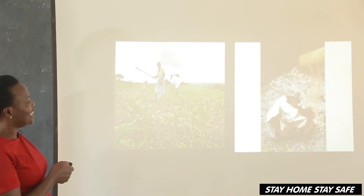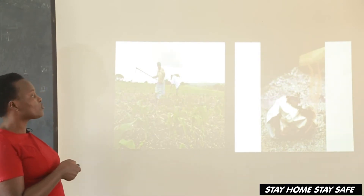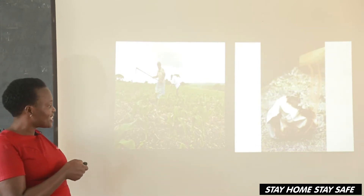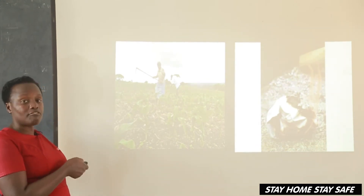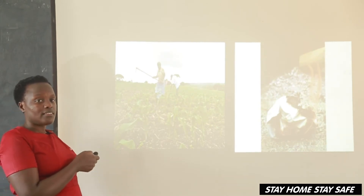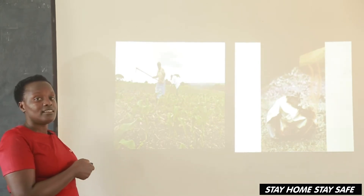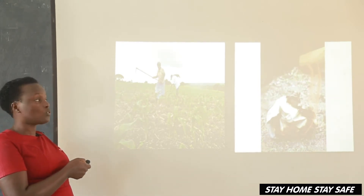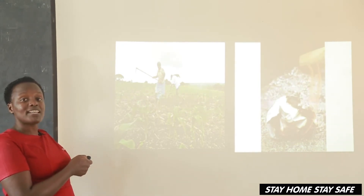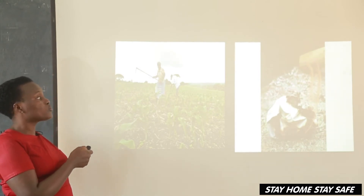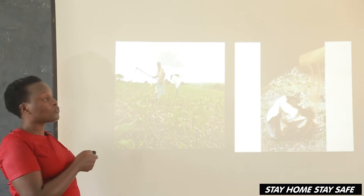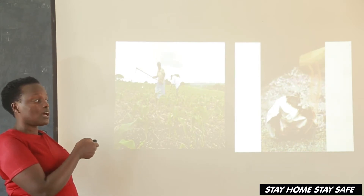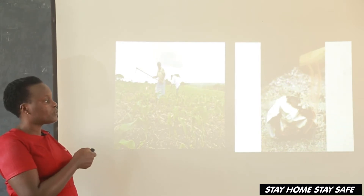Next picture: what have they grown in the garden? They are many, so we say: 'They have grown maize.' That is active voice. We change it to passive voice. Because we don't know their names, we say: 'Maize has been grown.'